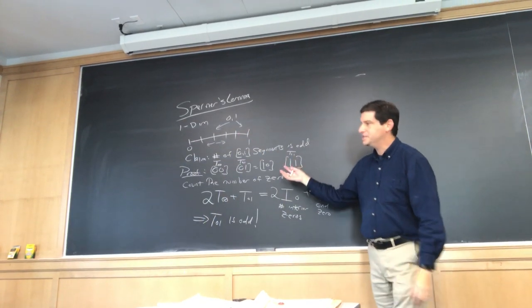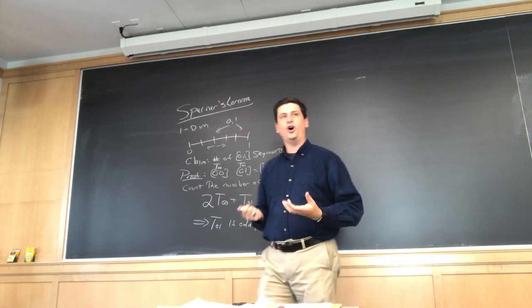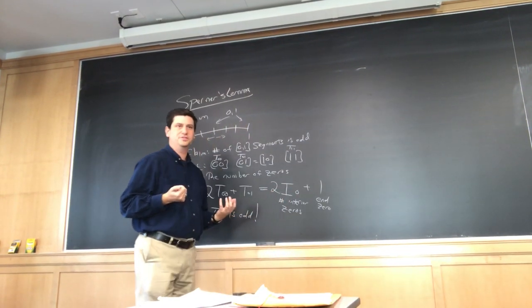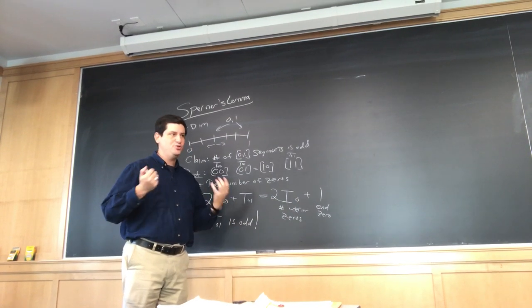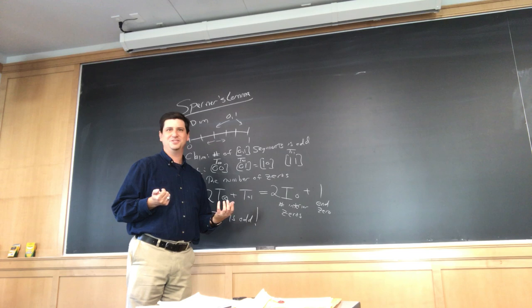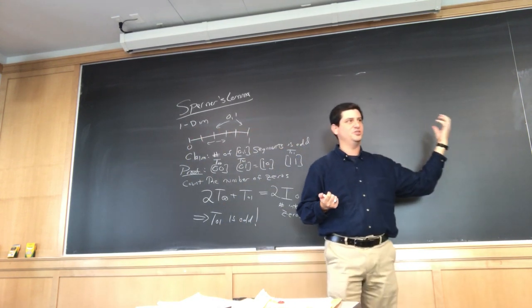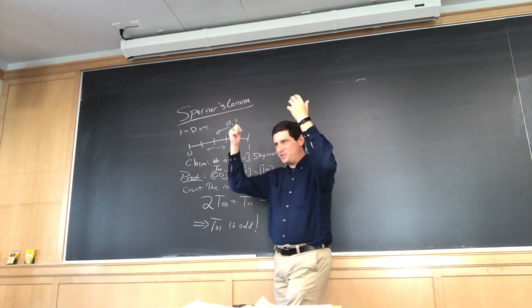So we're going to then take this, and then we're going to prove the result in two dimensions. And we'll prove that there will be an odd number of 0, 1, 2 triangles. By now, you should be able to predict what comes next. All right. What comes next? After we do the triangles and the 0, 1, 2 triangle exists, then there's an odd number of them. Do we do tetrahedra? We do tetrahedra.